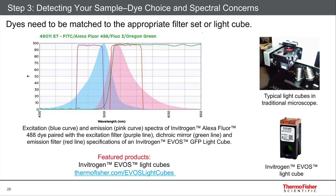First off, you want to match the dyes that you purchase to the filter sets and hardware settings that you have available. Fluorescein filter sets or light cubes are very common in instruments, so you'll probably have a green dye like Alexa Fluor 488, fluorescein, or FITC. Your scope might also be configured with a filter set for DAPI in the blue for nuclear labeling, maybe Texas Red in the red, or Cy3 in the red-orange color, or a far-red dye like Cy5 or Alexa Fluor 647.